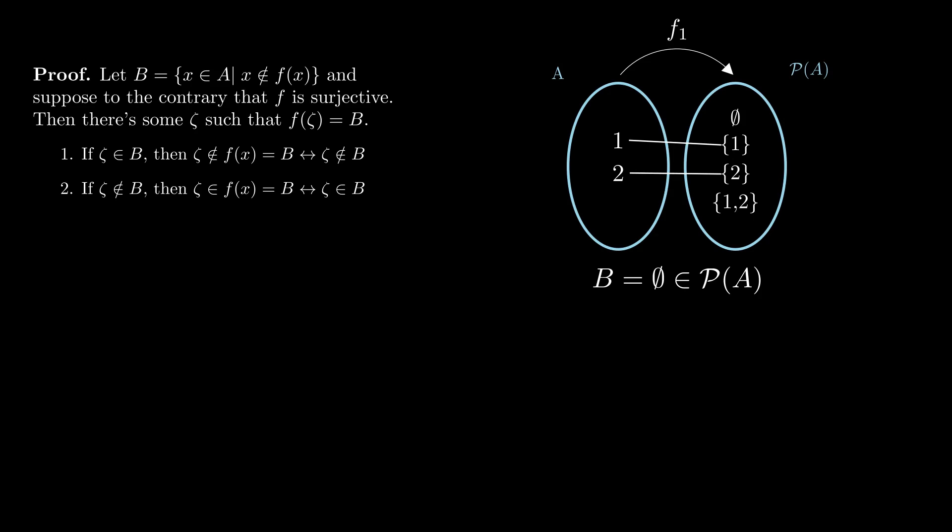Since assuming that there is an F that is surjective brought us a contradiction, we must conclude that there can't be such an F.